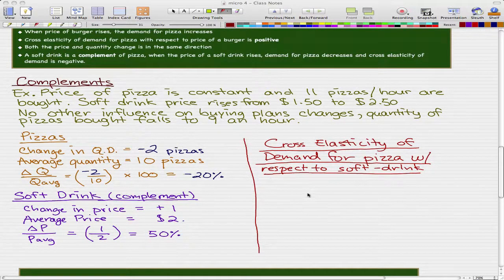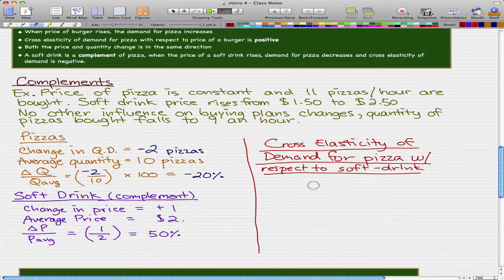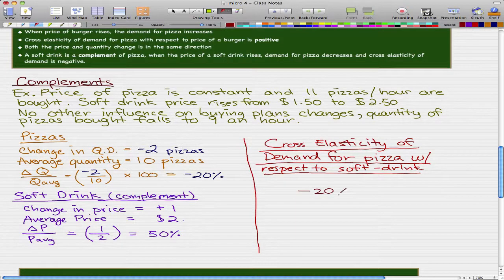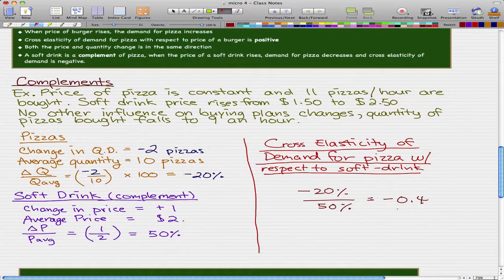Now the cross elasticity of demand is calculated much the same way as we did before except that now we use negative 20% instead of positive 20% and we divide that by 50%. And what that will give us is negative 0.4. Remember in the last video this was positive 0.4 but in this video it is negative 0.4 because we're talking about complements here.